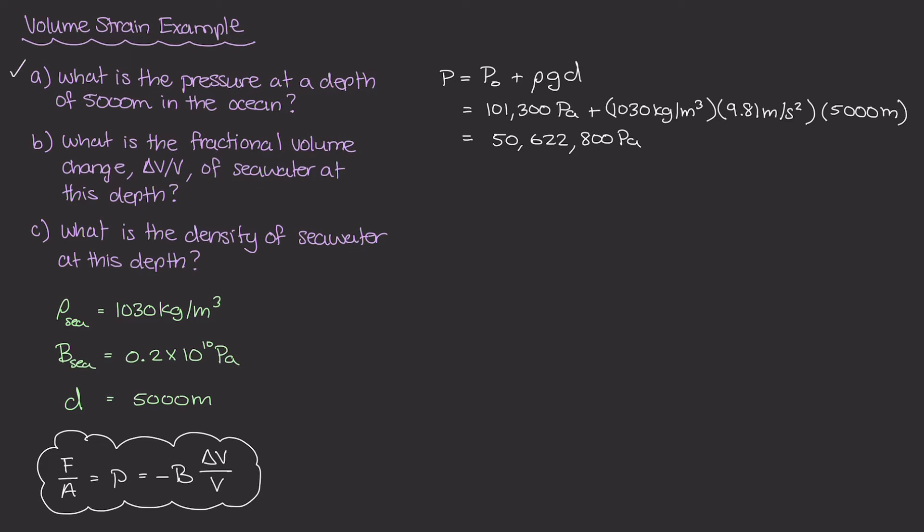The next part of this question is asking, what is the fractional volume change? In other words, this term of delta V to V. So in this equation down here, our delta V over V term is our volume strain. That's what we need to figure out. If I rewrite that equation up here, we have our pressure is equal to negative b times our fractional volume change. And if I solve for volume strain, then I get delta V over V,